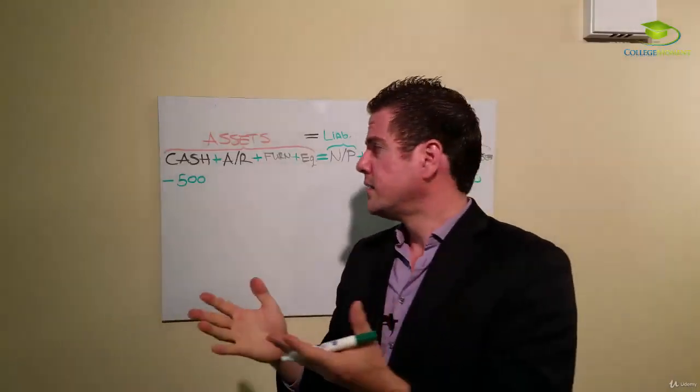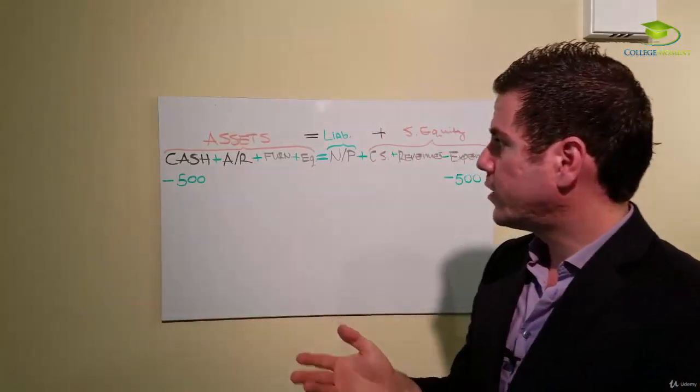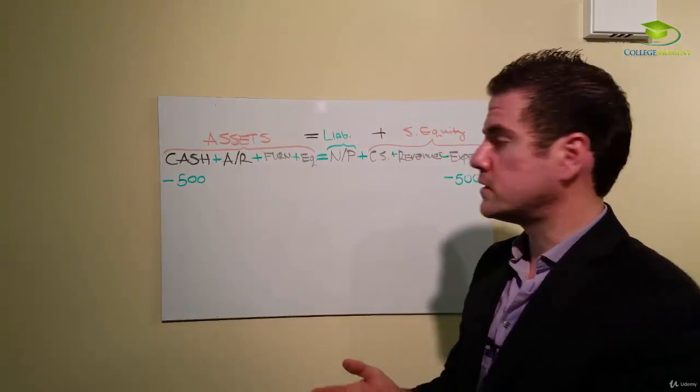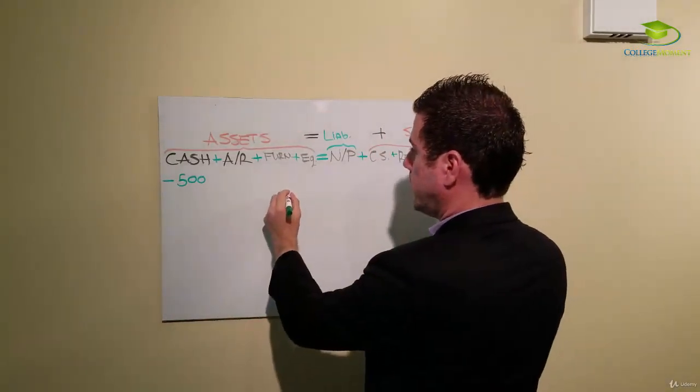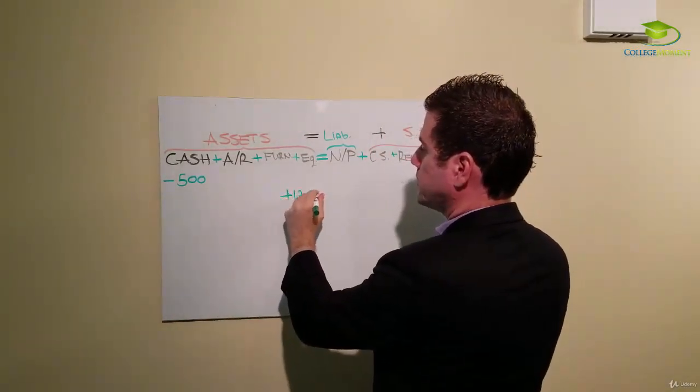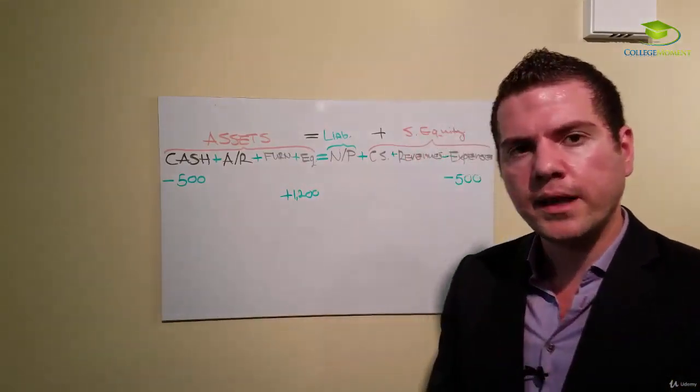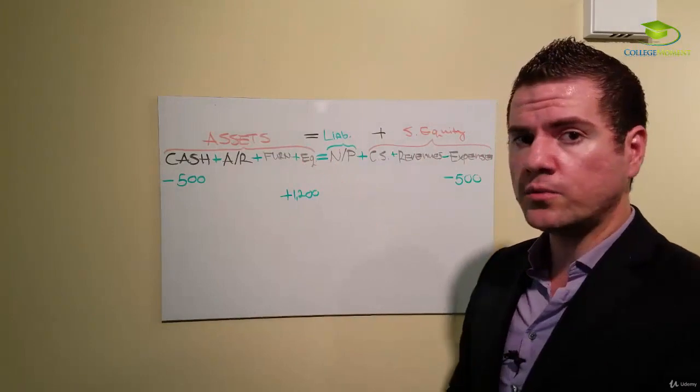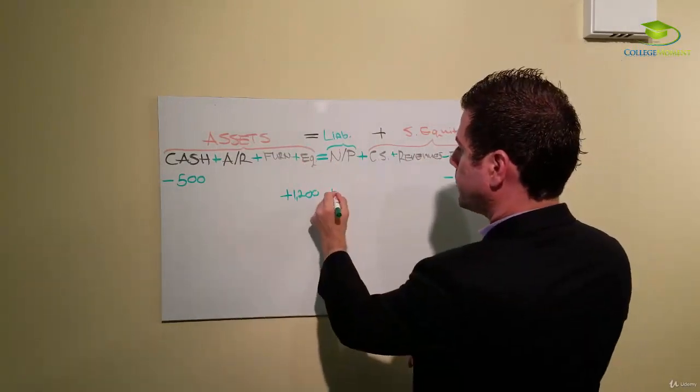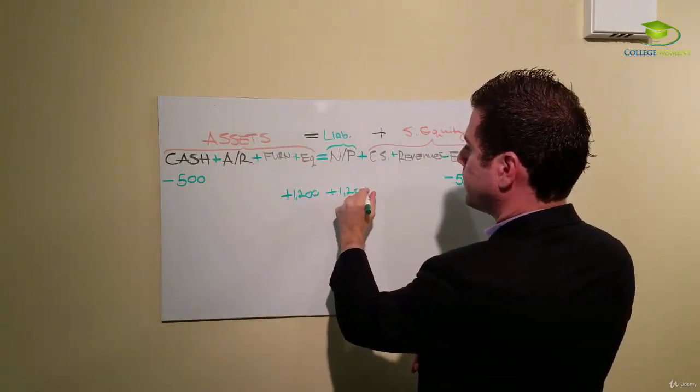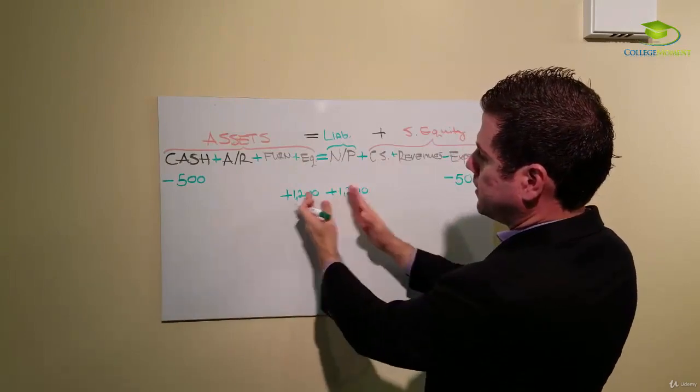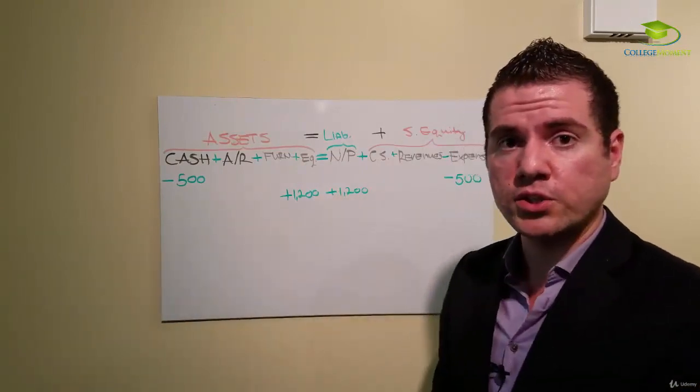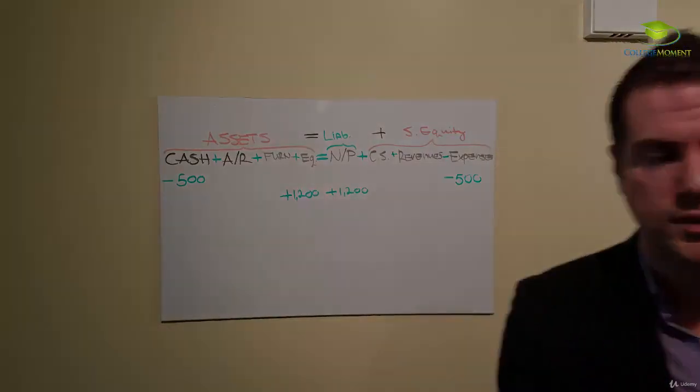Next transaction—the company purchased equipment of 1200. So equipment 1200, but the company did not pay cash. The company actually signed a loan for it, so we increase the notes payable for 1200. You see both sides of the equation balance.